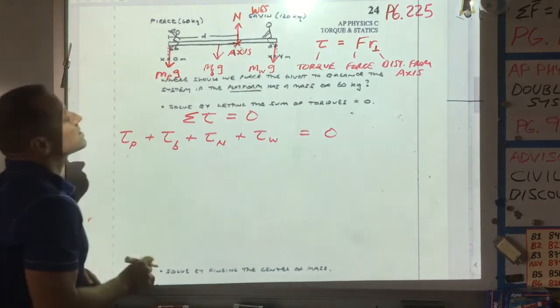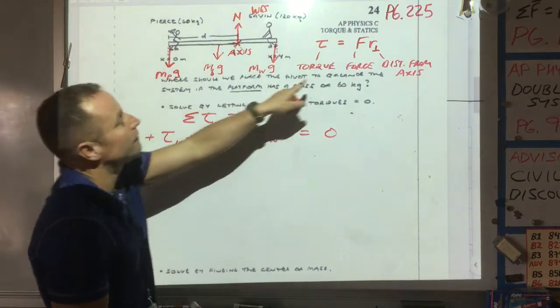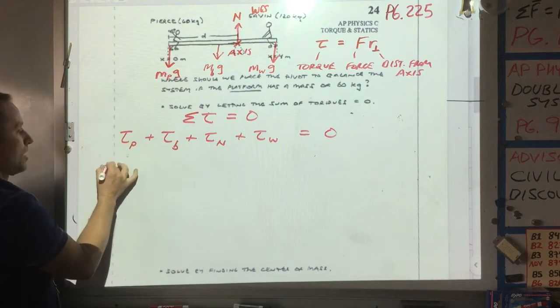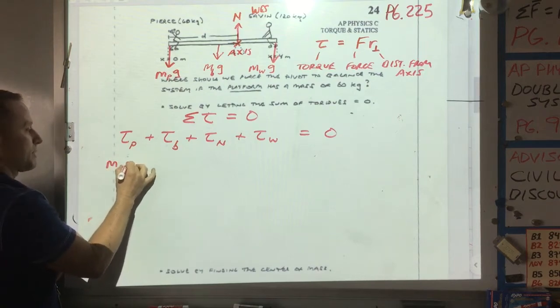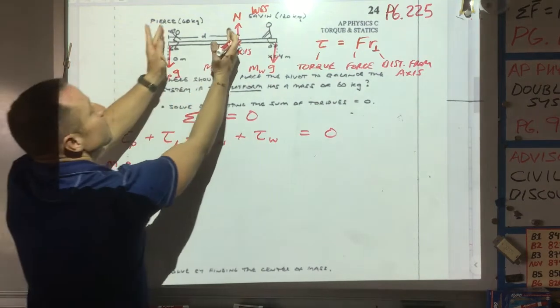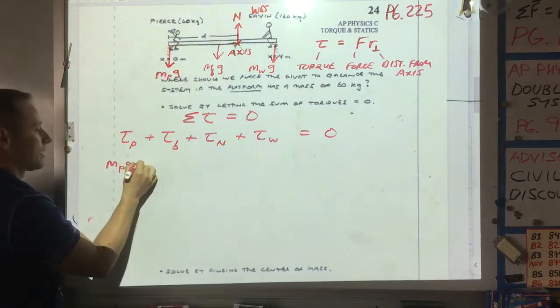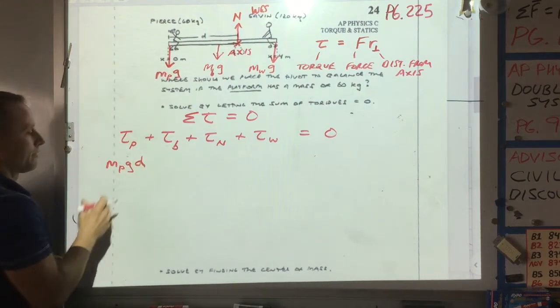We're going to say my force is M of Pierce times G. That's my force. And my distance from the axis is d. So that's my torque.